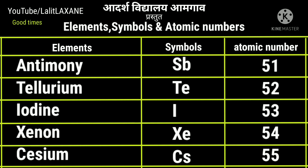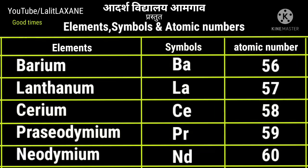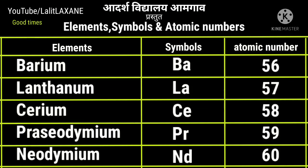Tellurium Te with atomic number 52. Iodine I, atomic number 53. Xenon Xe, 54. Cesium Cs with atomic number 55. Then at atomic number 56, barium with symbol Ba.